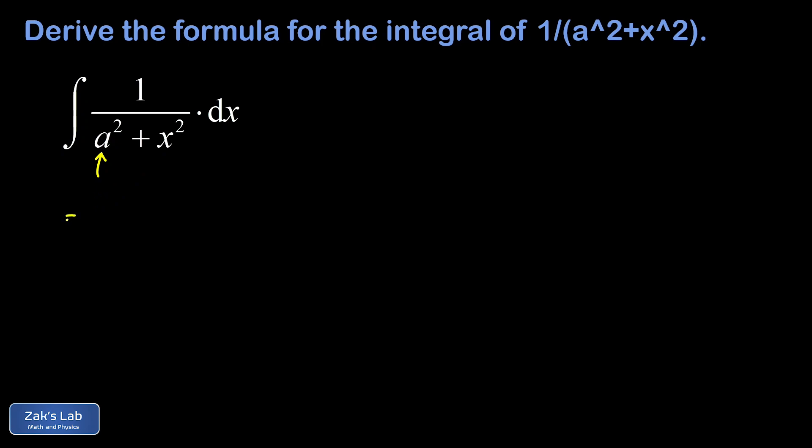We're going to make progress here by factoring an a squared out of the denominator, so I end up with a 1 over a squared and then I have an integral of 1 over 1 plus x squared over a squared.